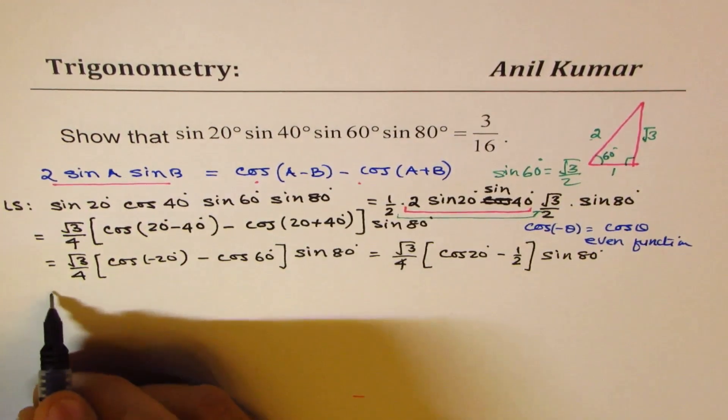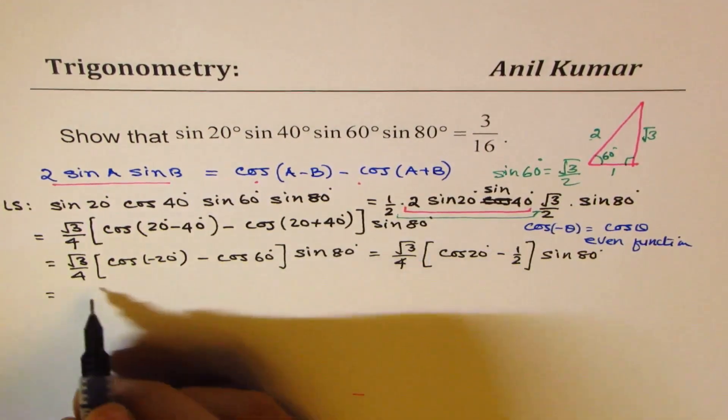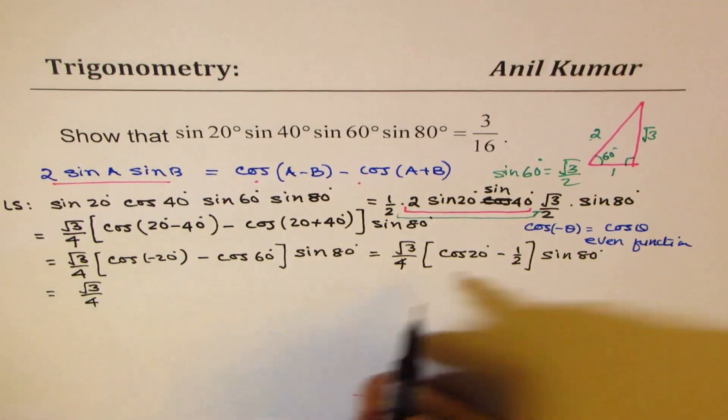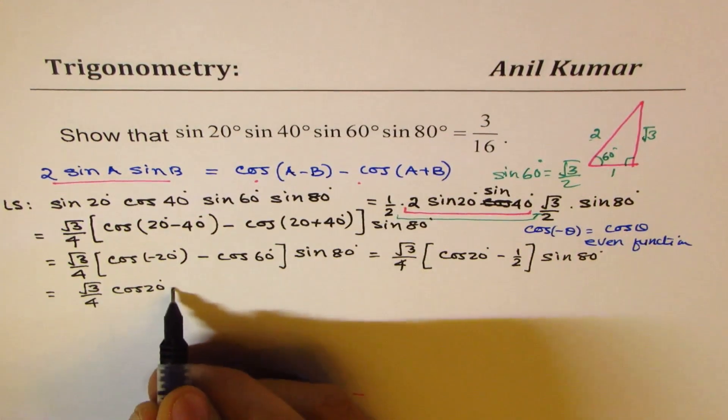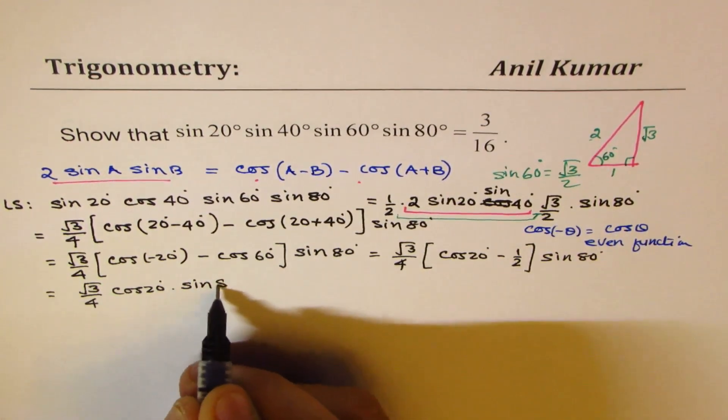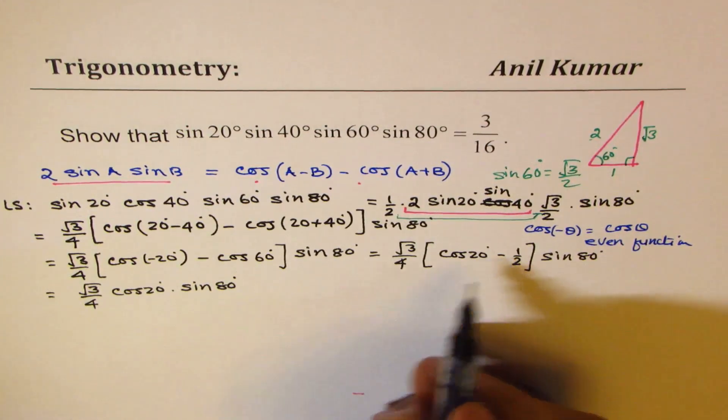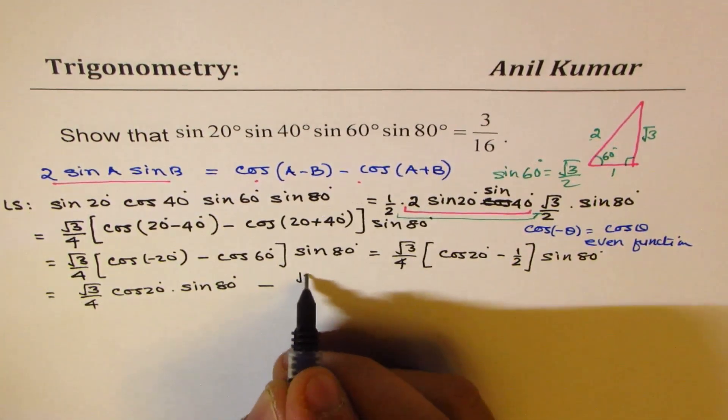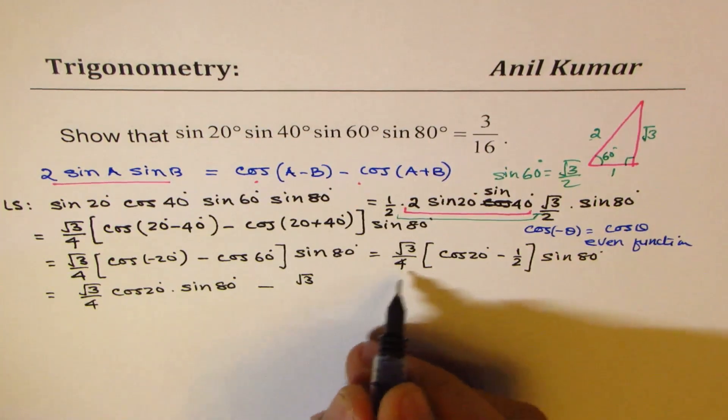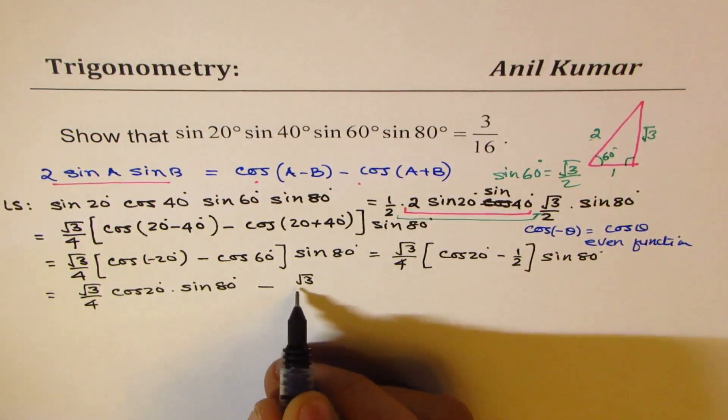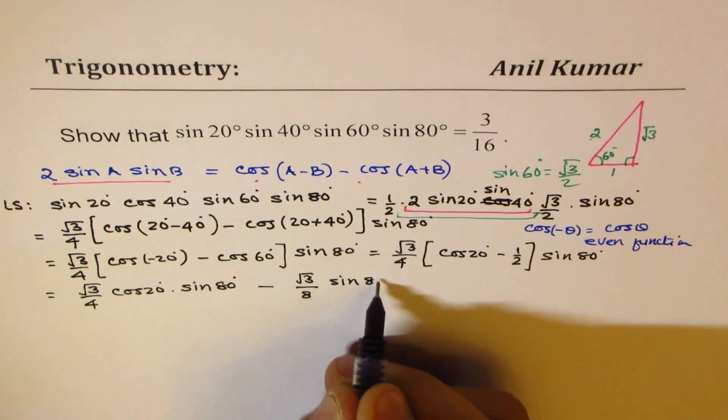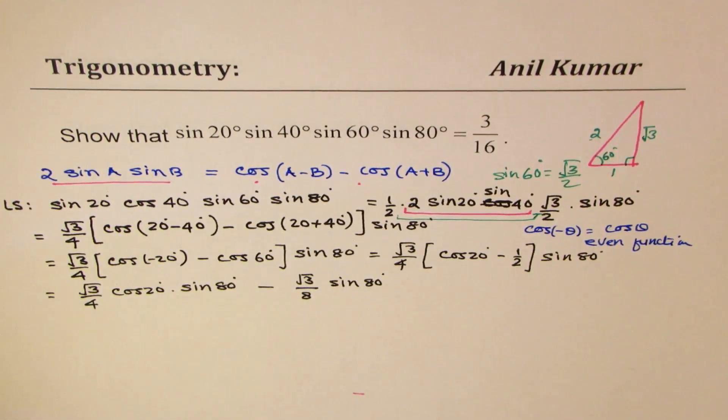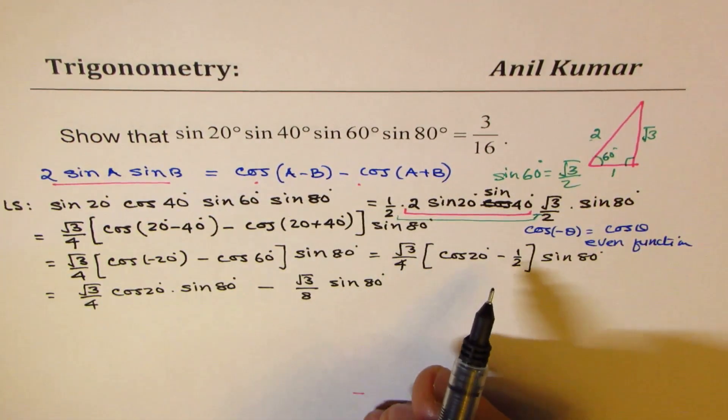Now let's open the bracket. So if I open the bracket, I get √3 over 4, cos 20, and sin 80°. And this side, we get minus √3 over 4 times 2 is 8, sin 80°. So that's what we get.